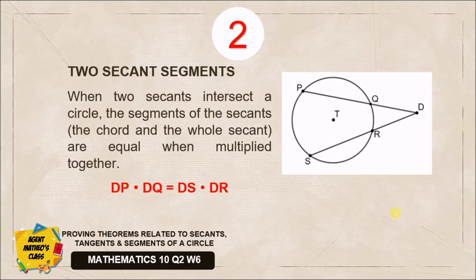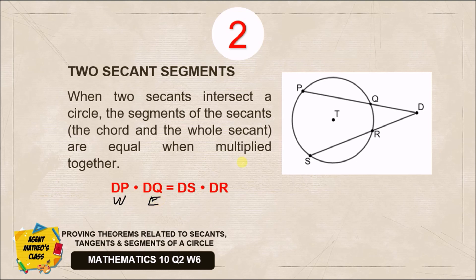Let us have our second theorem about proving theorems involving secants, tangents, and segments — this is the Two-Secant Segments theorem. When two secants intersect a circle, the segments of the secants — the chord and the whole secant — are equal when multiplied together. We will prove that the product of DP and DQ, where DP is the whole part of our secant and DQ is the external part outside the circle.